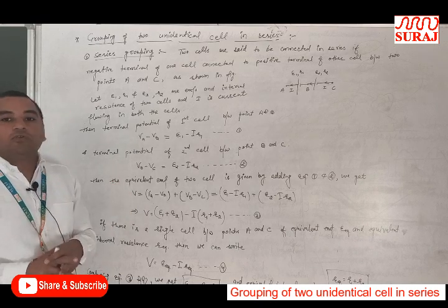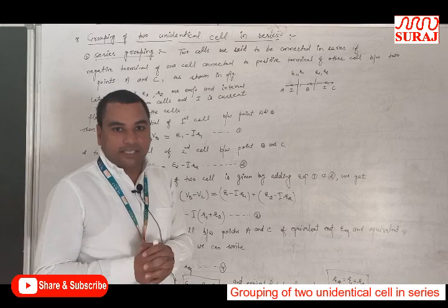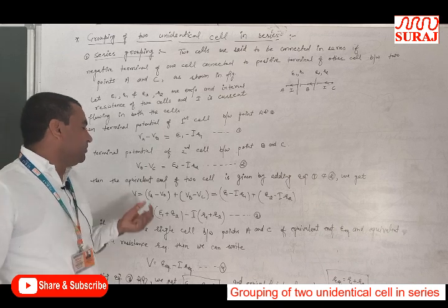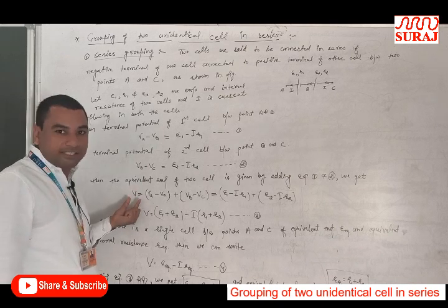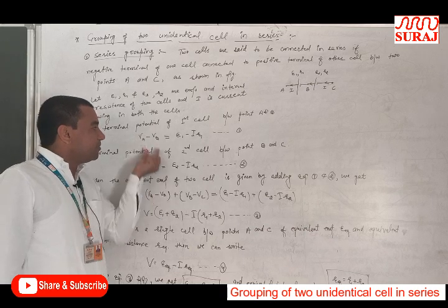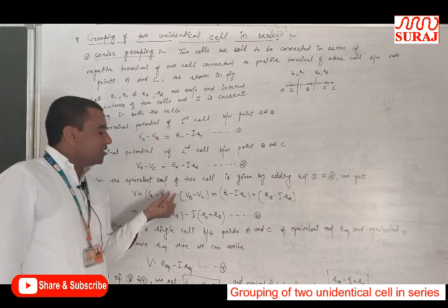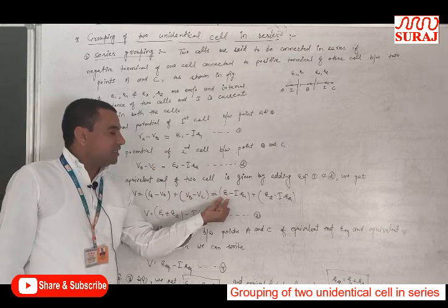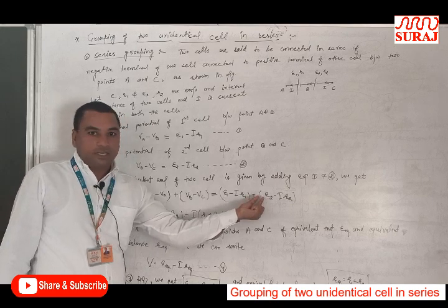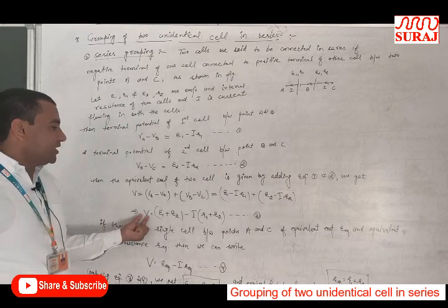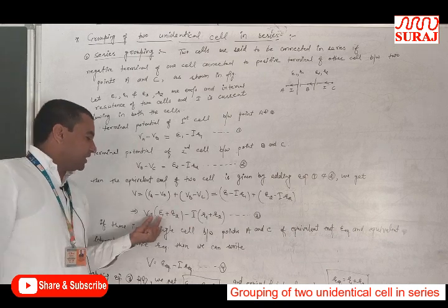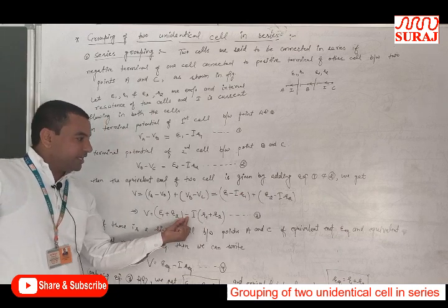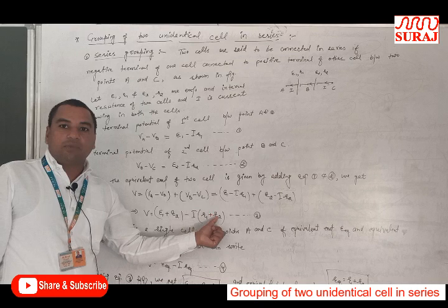Now, the equivalent EMF of two cells between points A and C can be calculated by adding equations 1 and 2. The terminal potential between points A and C, that is V, equals (V_A minus V_B) plus (V_B minus V_C), which gives E1 minus I·R1 plus E2 minus I·R2. From this, we can write V is equal to (E1 plus E2) minus I·(R1 plus R2).